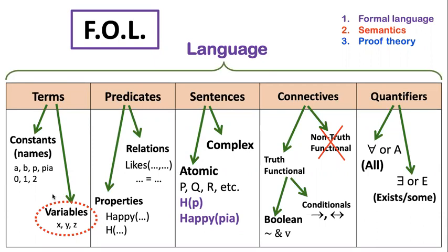Variables are like constants, they are both types of terms and all terms are written with lowercase letters. To make it easy to tell whether some letter is a constant or variable, we use the end of the alphabet for variables and the rest of the alphabet for constants.